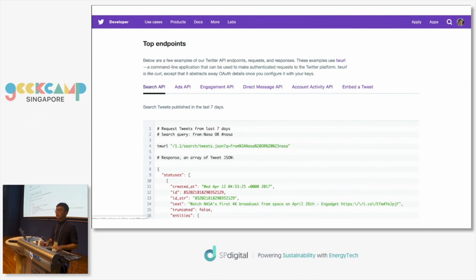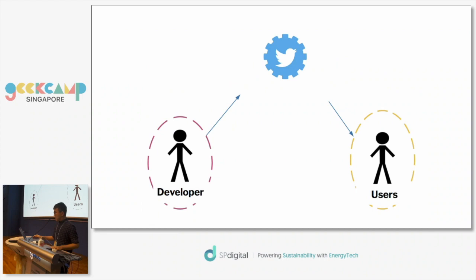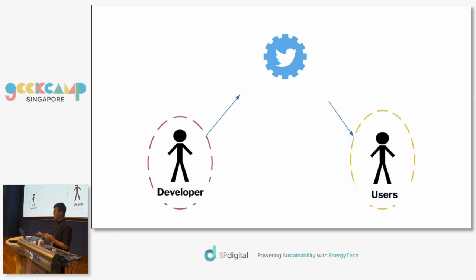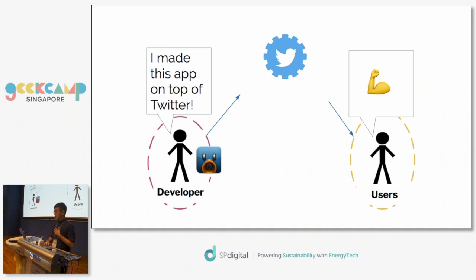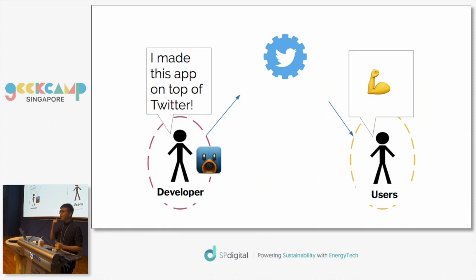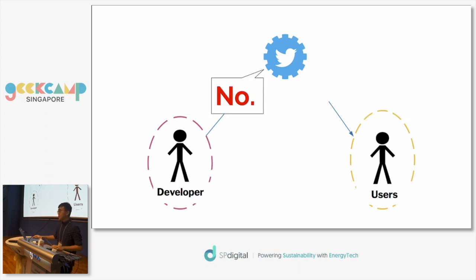Let's imagine you're a developer and you want to build the next big thing for Twitter users. You have to use the Twitter API. You ask Twitter for permission, they say yes and give you an API key. You build an unofficial Twitter client on top of the API, user growth is steady, investors are calling in, everything is smooth sailing — until Twitter says no, actually I want you to stop using our API.